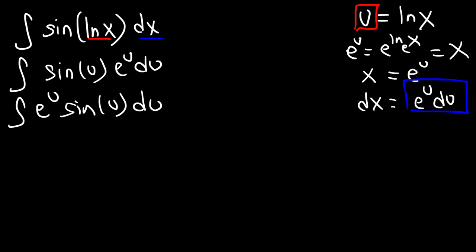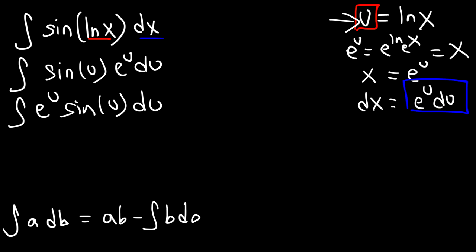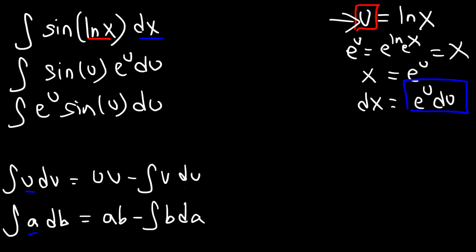Now the integration by parts formula is the integral of u dv, which equals uv minus the integral of v du. Because I don't want to confuse that u with our substitution variable u, I'm going to change the letters of that formula. So let's say the integral of a db equals ab minus the integral of b da — everywhere we saw u, we replace it with a, and everywhere there was v, it's replaced with b.